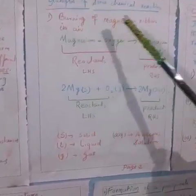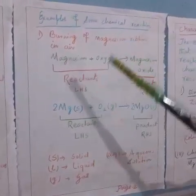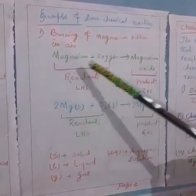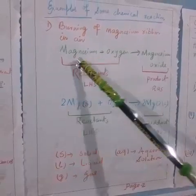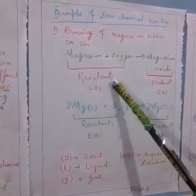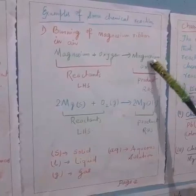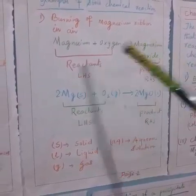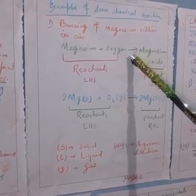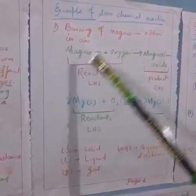There are some examples of the chemical reaction. Like burning of magnesium ribbon in air. When magnesium combined with oxygen, means magnesium is burnt in the presence of oxygen, magnesium oxide is formed. In this reaction, magnesium and oxygen are the reactants because they are written on the left-hand side of the chemical reaction. Magnesium oxide is a product. It is written on the right-hand side of the reaction. In this reaction, there is a point of separation that is called arrow, this one, that separates the reactants and products.